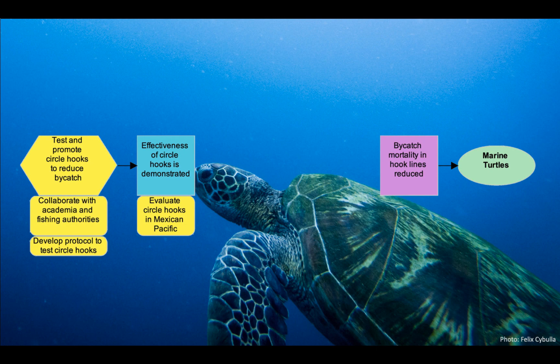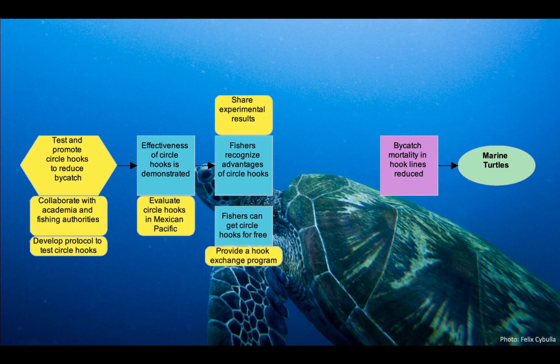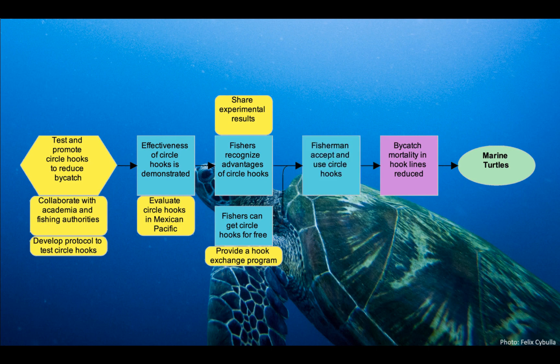So they assumed in their theory of change that if effectiveness of circle hooks was demonstrated, then fishers would recognize the advantages of circle hooks and would get circle hooks for free if the project provided a hook exchange program. And if these results occurred in those blue boxes, then the team assumed that the fishermen would accept and use circle hooks, which would in turn reduce bycatch mortality from hook lines and lead to improved viability of the marine turtle population.